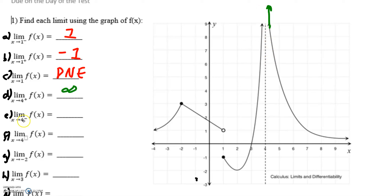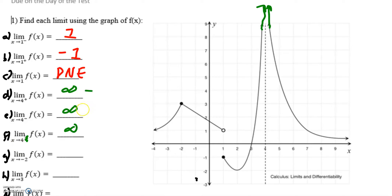My limit reaching the x value of four from the left — my graph starts over here, jumps, and then as I approach x equals four, goes towards positive infinity as well. Which means that my limit at four exactly would also be infinity, because the limit from the left and the right are both the same.